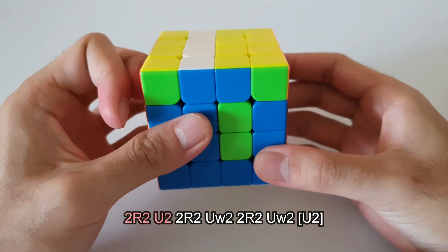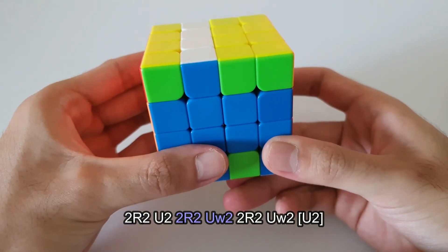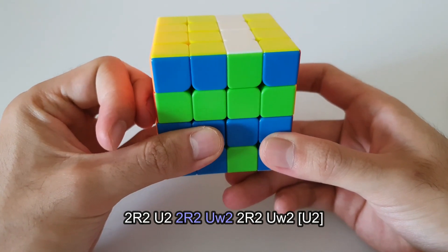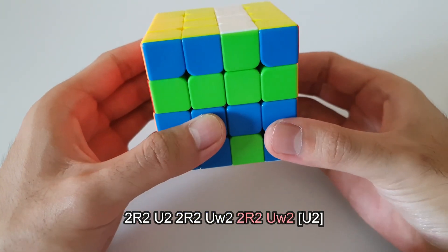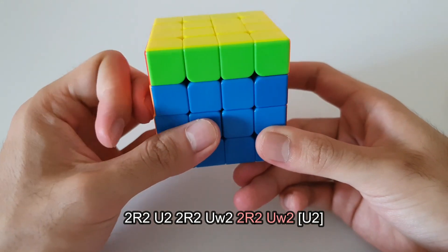Followed by another 2R2. And then that's followed by a wide U2, so the entire top half of the cube, followed by another 2R2, and another wide U2.